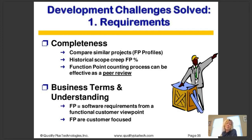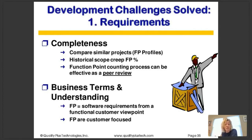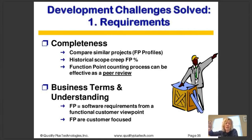If we start building a piece of software with an 18-month schedule, that software typically will grow 1.5 percent per month, according to Capers Jones, a very famous author in software estimation and measurement. Function point counting can be effective as a peer review. When we look at all aspects of the software, we have inputs — adds, changes, deletes (the create, update, and delete components of a CRUD matrix) — and reads would be a query. The function point counting process asks: what data is maintained, what data do we reference, what are my input processes, output processes, and queries? It's all presented in business terms.